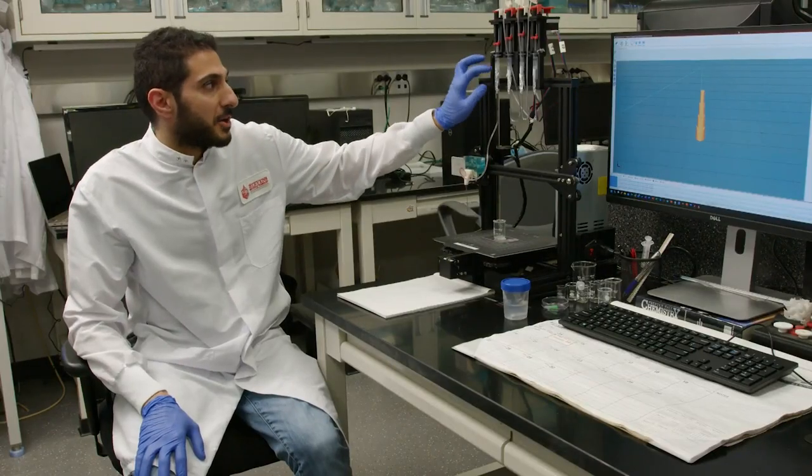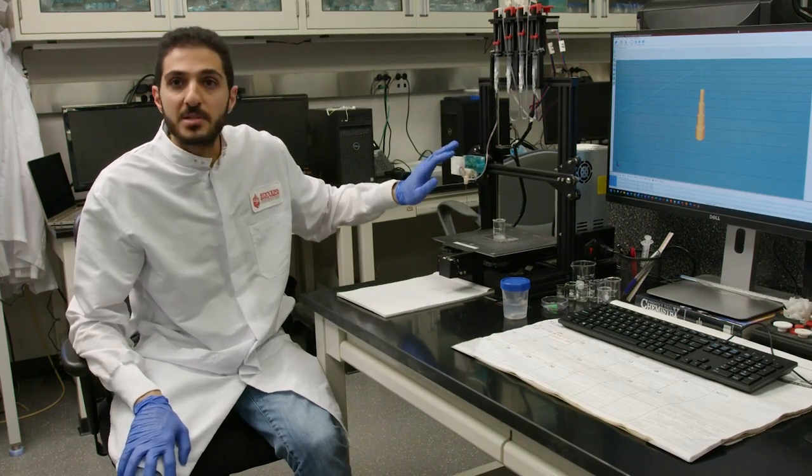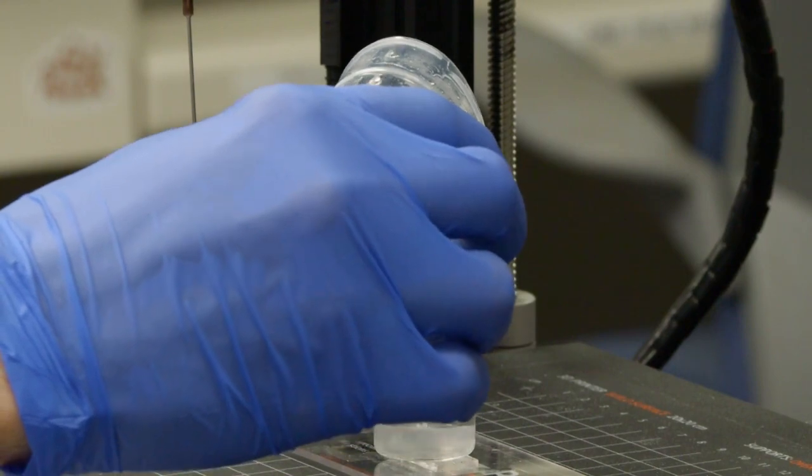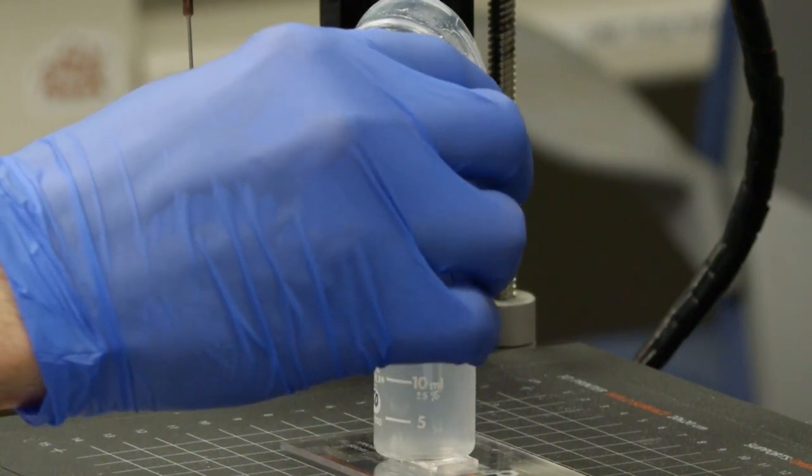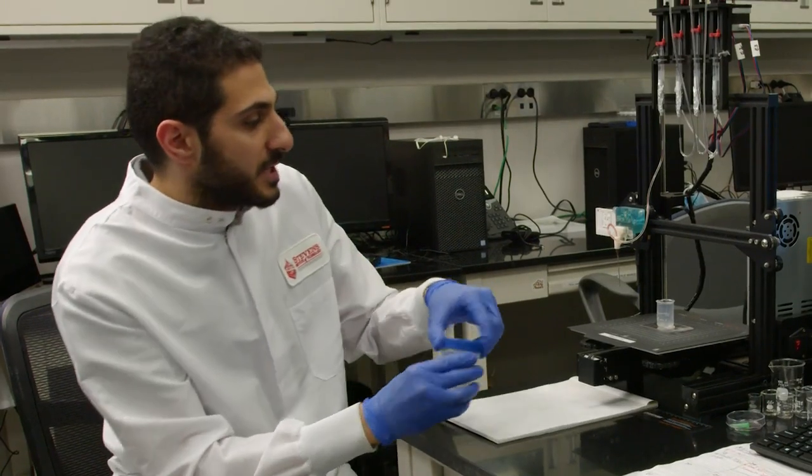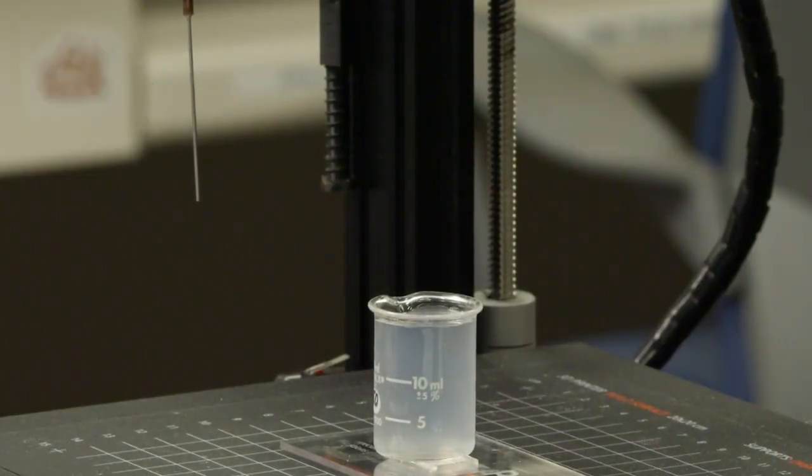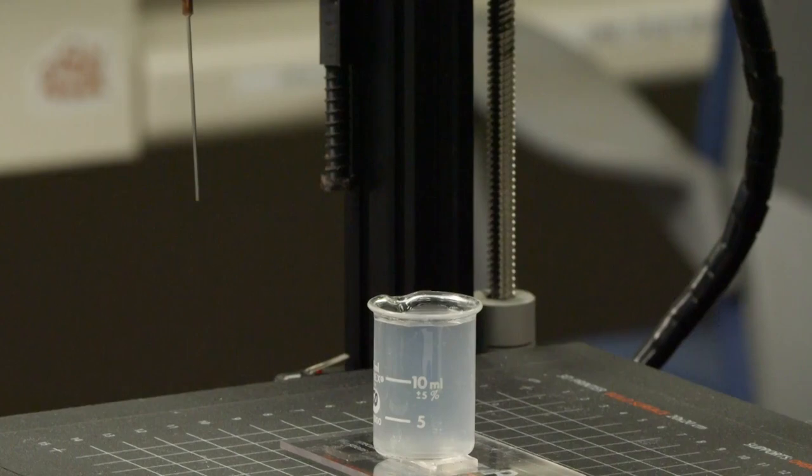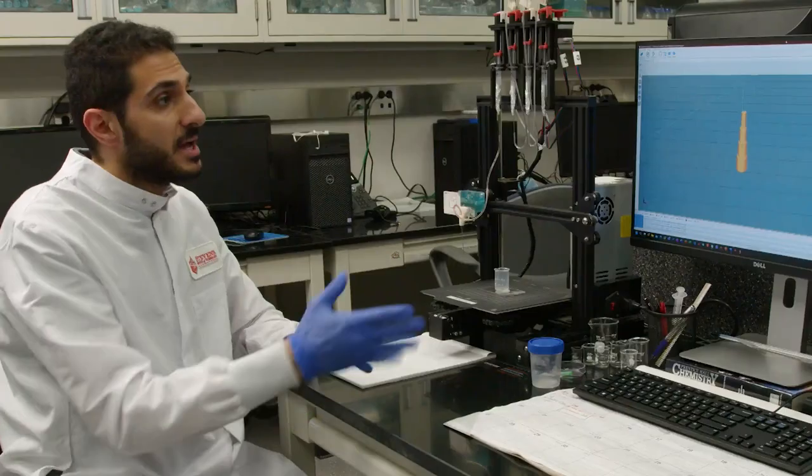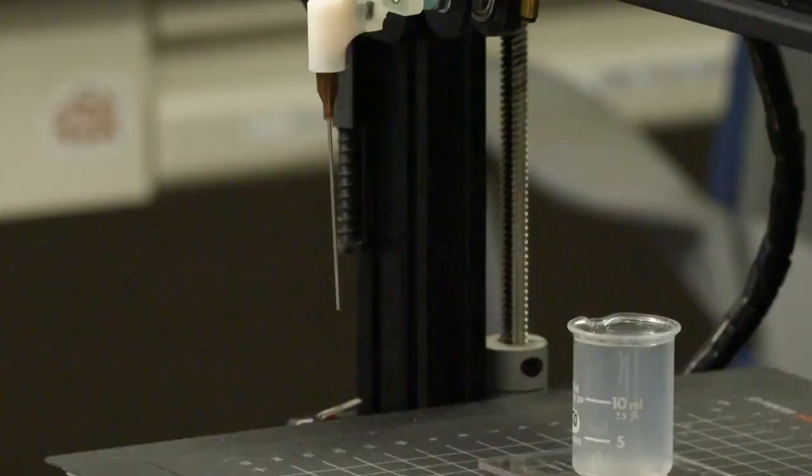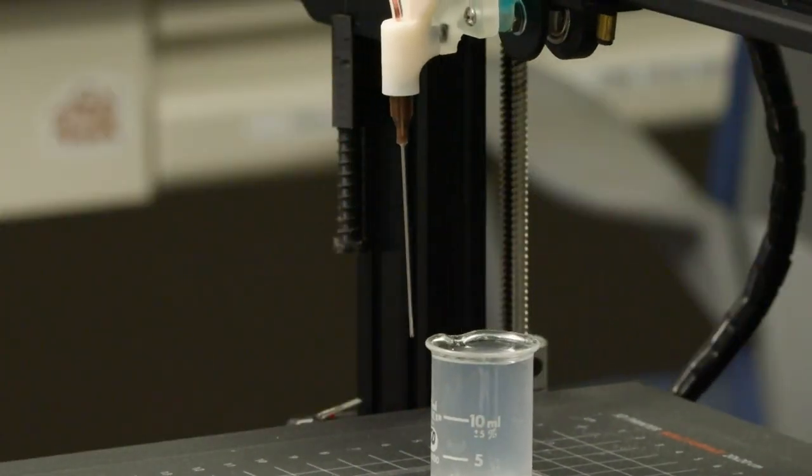We have the bio-ink loaded in the syringes and machine ready to print. So now I will be loading the support bath material, which is nanoclay. And we will be suspending the bio-ink within this nanoclay. It will help us maintain the structure with low viscosity bio-inks. And for a sample print, we will be printing a telescopic tube that represents a capillary tube that has different diameters.